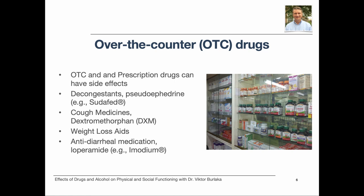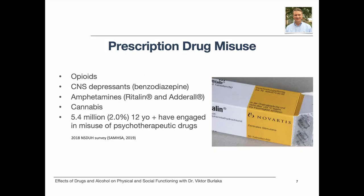Loperamide is normally used as antidiarrheal medication. When consumed in large quantities or in combination with other substances, it may cause psychoactive effects similar to opioids. Prescription drugs that are often misused include opioids, central nervous system depressants like benzodiazepines, and amphetamines like Ritalin and Adderall. As cannabis becomes increasingly accepted for medicinal use, it too may become a subject of prescription misuse.